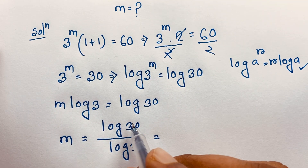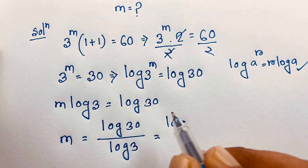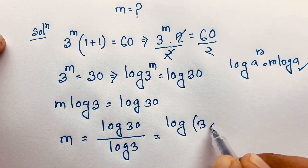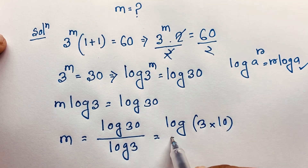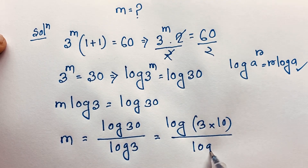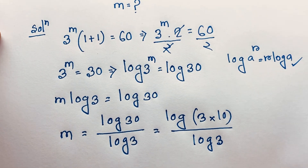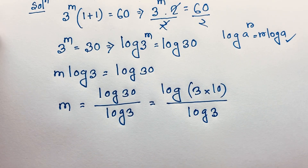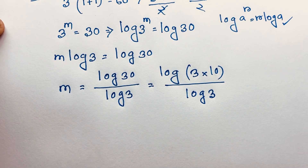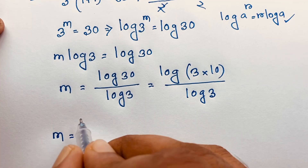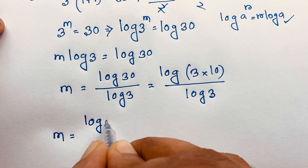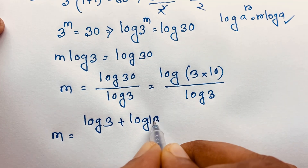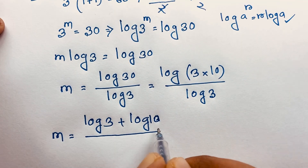Now, log 30 can be written as log of 3 times 10, over log 3. Applying the product rule — log(ab) equals log a plus log b — we get m equals (log 3 plus log 10) over log 3.